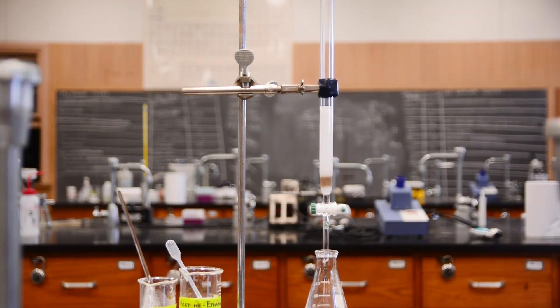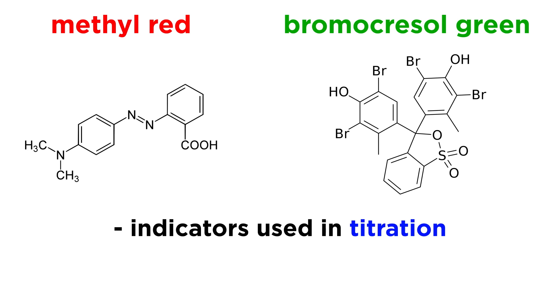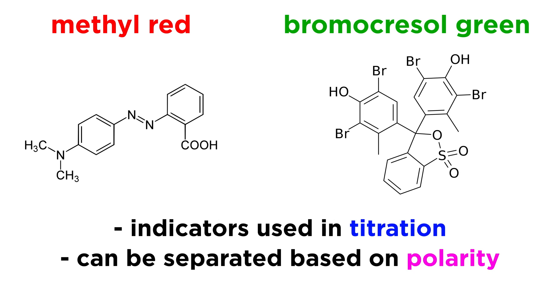We're now ready to load the sample. Today we're separating a mixture of methyl red and bromocresol green. You may know them as indicators that are used in titration, but if you look at their structures, you can see that they have different functional groups, which allows them to be separated based on their polarities.